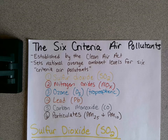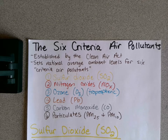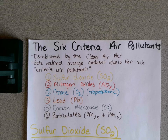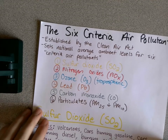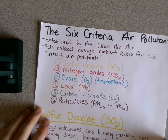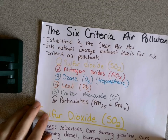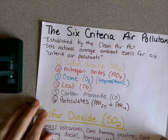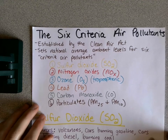Hey everyone. So I wanted to make a video about the six criteria air pollutants because this is one of the most common topics on the AP exam. The six criteria air pollutants were established by the Clean Air Act during the 1960s and 1970s when Richard Nixon was president. It basically established what they call ambient air levels for six things called criteria air pollutants.